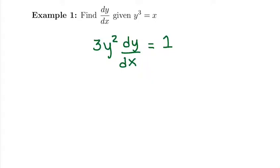Instead of having it multiplied by 3y squared, we need to divide by that, so it's no longer multiplied with it.